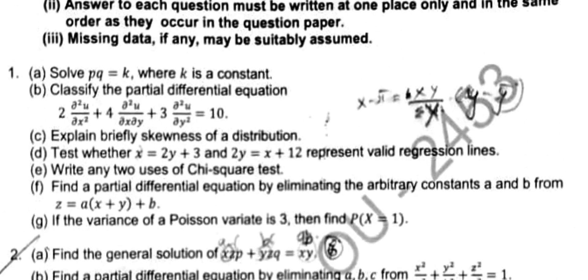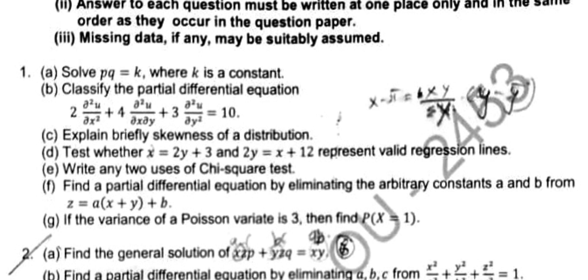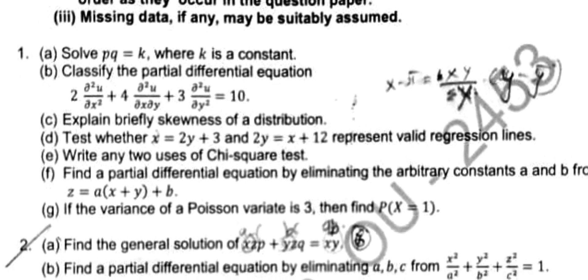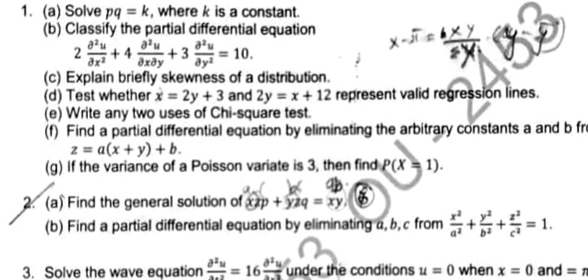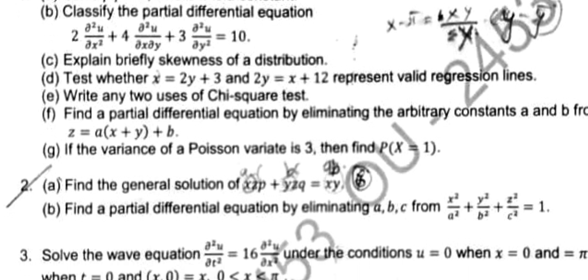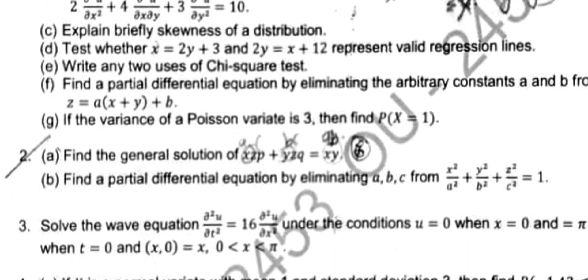He asked solve pq equals k where k is a constant. Then classify partial differential equation. Then briefly explain skewness of a distribution. Then he gave two equations - he is asking mean. Test whether they represent valid regression lines - so correlation coefficient if you find, if r is between minus one and one they are valid, if not they are invalid. Two uses of chi-square test. Then PDE, G is variance - he gave Poisson distribution, you have to find lambda value. Lambda value is nothing but mean.